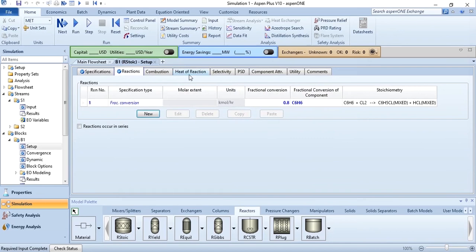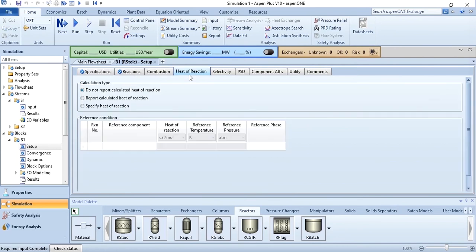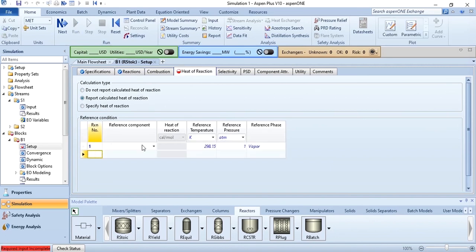Another thing which you have to do, which is given in the problem statement, is to calculate the heat of reaction. As I have told you, there are three possibilities. Do not report, calculated heat of reaction. If you want it to report, specify reaction number 1, specify reference component as benzene, 298.15 Kelvin or 1 atm. So click on run, and once after running, results are available.